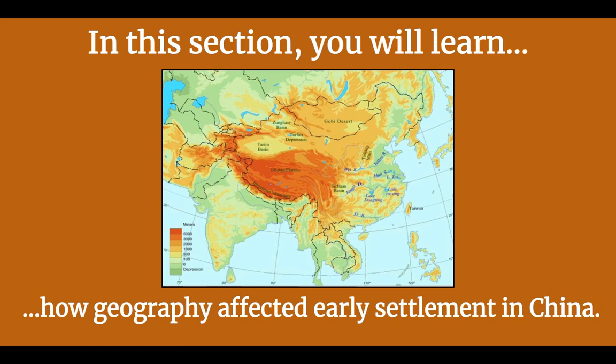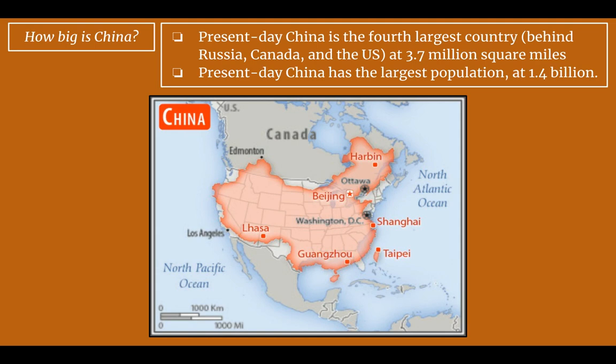This is an elevation map showing the red is higher up and the green is the lowest down. You can see a lot of elevated land in China. Present day China is the fourth largest country behind Russia, Canada, and the United States at 3.7 million square miles. Present day China has the largest population at 1.4 billion people. This picture shows how China and the United States are very comparable in size — technically the US is a little bit bigger, probably because of Alaska.